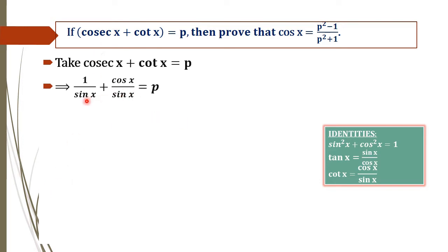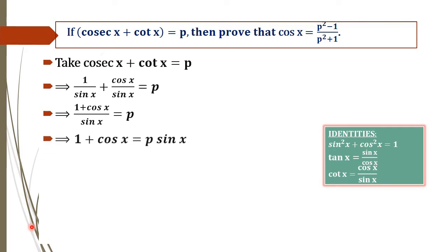Here, sin x is the denominator on both terms. By taking the LCM, we will get 1 plus cos x, whole divided by sin x, equal to p. Again, multiplying sin x to the right, we will get 1 plus cos x equal to p sin x. Our aim is to change each and every term here in terms of cos x.